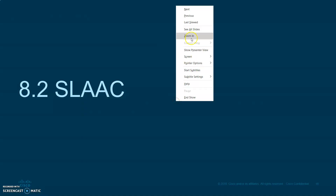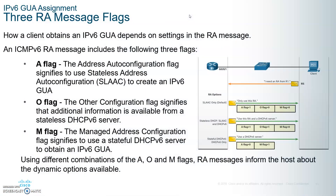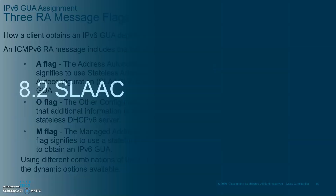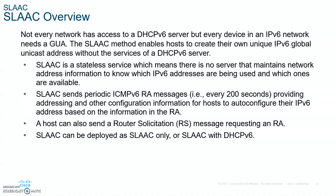If A equals 1 and O and M equal 0, that means the client is to use the IPv6 GUA prefix in the RA and dynamically create its own address. When O is 0 and M is 0, the client is informed to use only the additional information in the RA message — this is pure SLAAC.